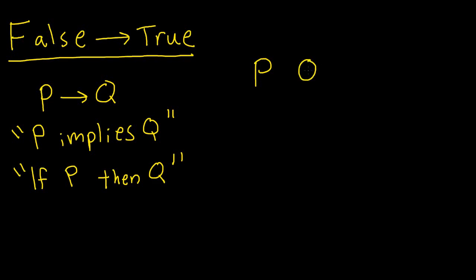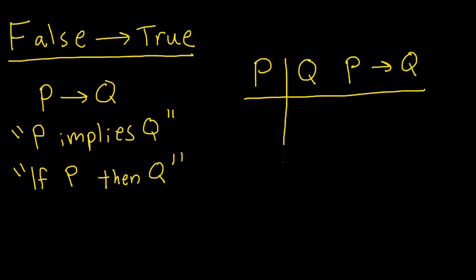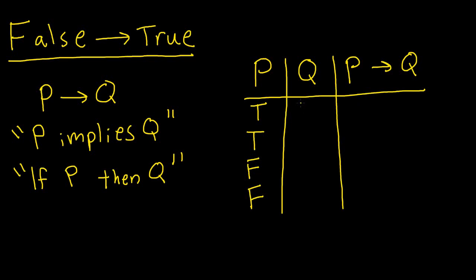Here we have P, Q, and P implies Q, and here we have four possibilities. P could be true or false, and Q could also be true or false. Here we have all four possibilities.